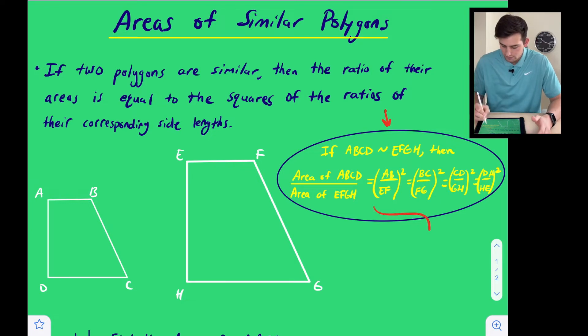So all four of these that we see over here, those are the corresponding side lengths. So we don't have to know all four of the side lengths. We just need to know one pair of corresponding side lengths and then the area of one of the shapes, and that can help us find the area of the second shape.